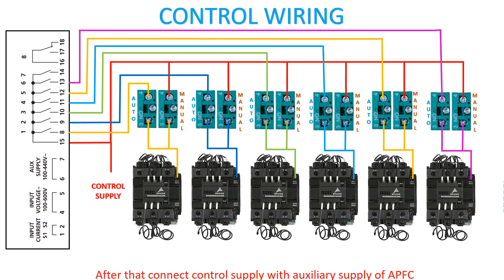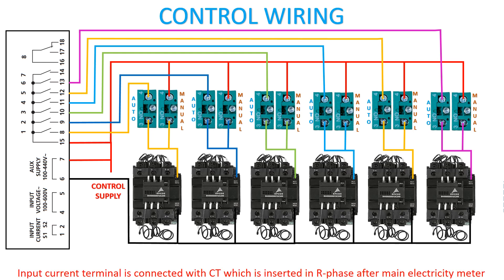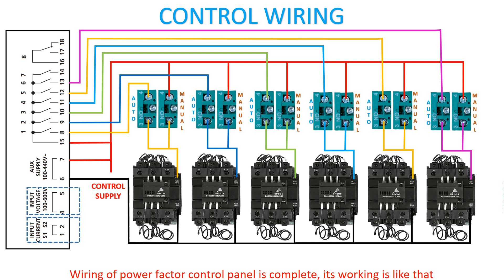After that, connect control supply with the auxiliary supply of APFC. Always check the auxiliary supply of any electrical equipment carefully. Finally, connect neutral with the other terminal of the contactor coil. The input current terminal is connected with CT, which is inserted in the phase after the main electricity meter. The input voltage terminal is connected with Y and B phase. Wiring of the power factor control panel is complete.